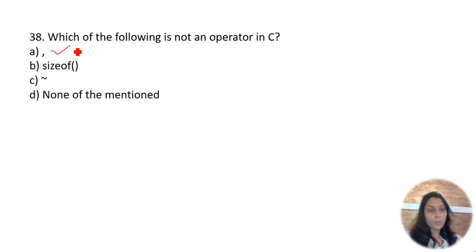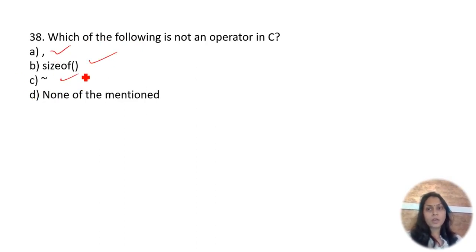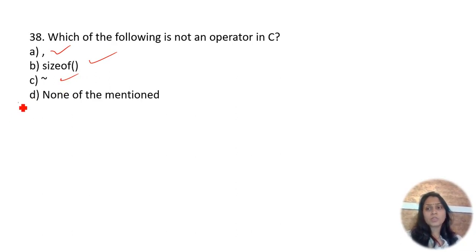Which of the following is not an operator in C? Comma is an operator, sizeof is an operator, and tilde (~) is also an operator. All of these are operators in C — so none of the mentioned is the answer.